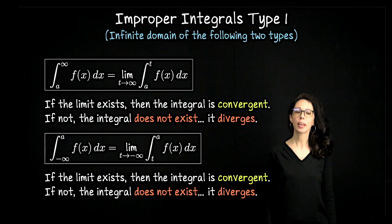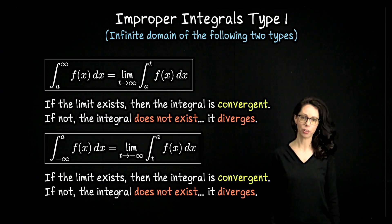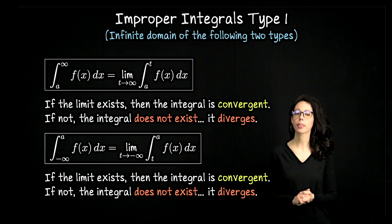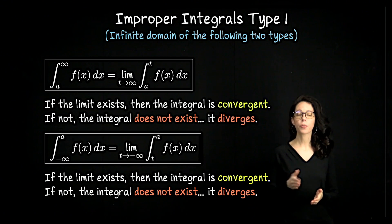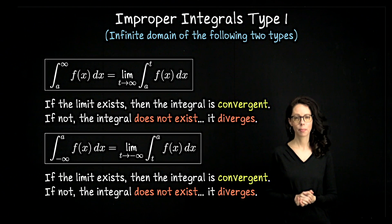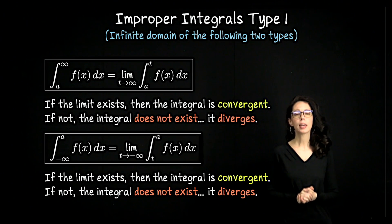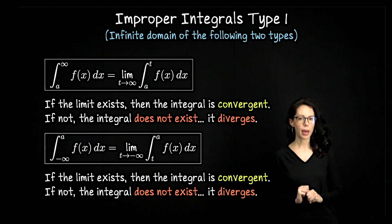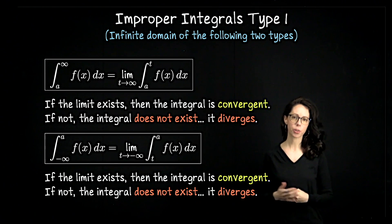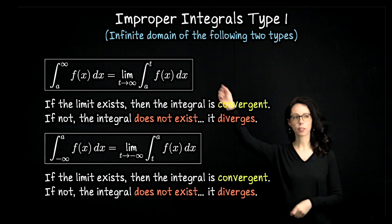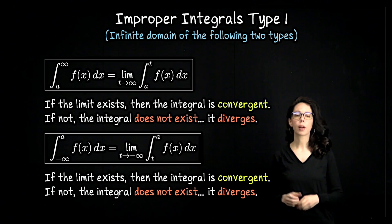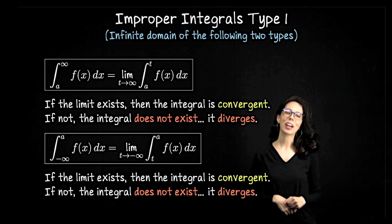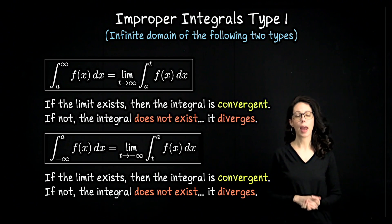In this video, we are going to look at improper integrals. There are different types of improper integrals, so what I'm going to do is break this into three types and we'll have three different videos, one for each type. This first type is going to be integrals over a domain which is infinite in size, but one of the bounds is a constant and the other one is plus or minus infinity.